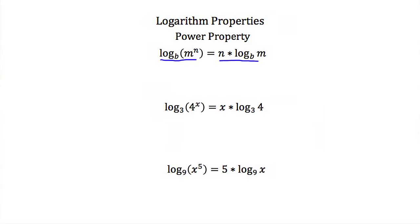An example would be the log base three of four to the x. We take this x and pull it out front, so the log base three of four to the x equals x times the log of four. Here's another example: the log base nine of x to the fifth power. Using the power property, we pull the five out front, so this becomes five times the log base nine of x.